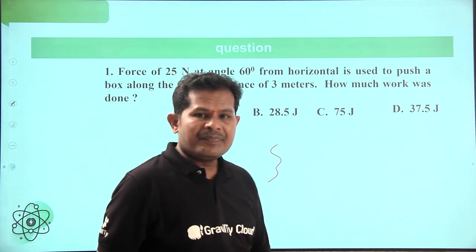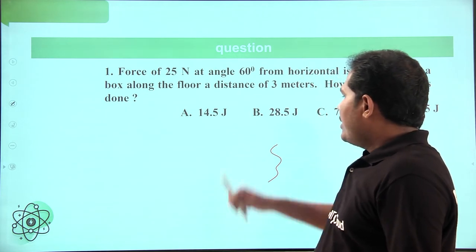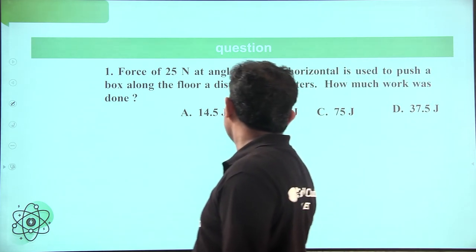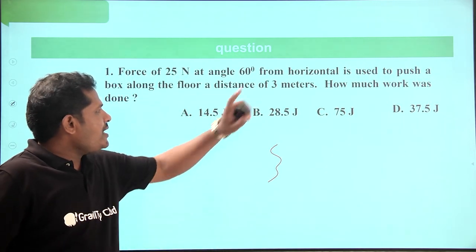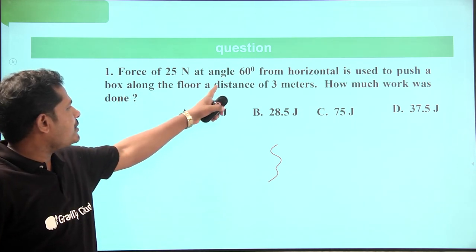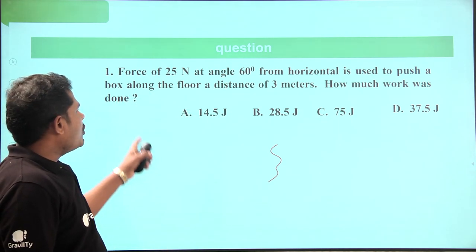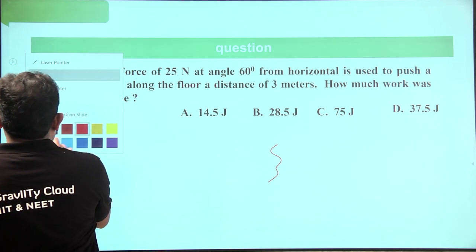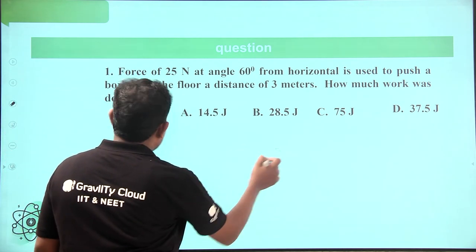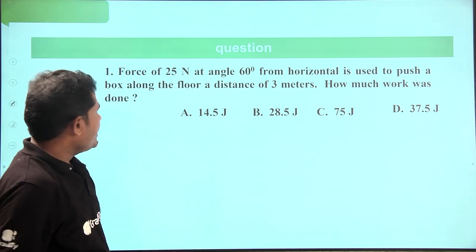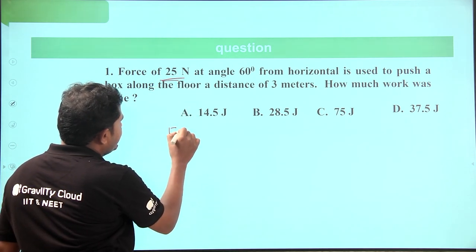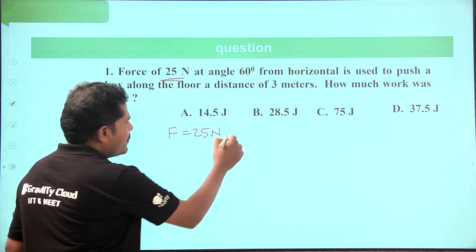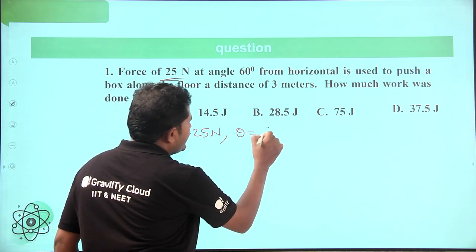Let us check with some questions. A force of 25 Newton at an angle of 60 degrees from the horizontal is used to push a box along the floor a distance of 3 meters. How much work was done? Given values: force F equals 25 Newton, angle between force and displacement is 60 degrees.